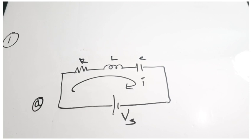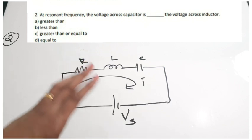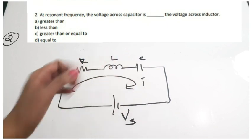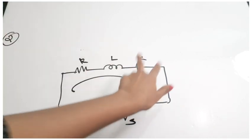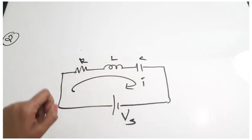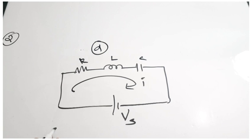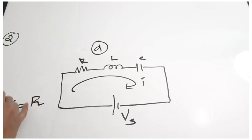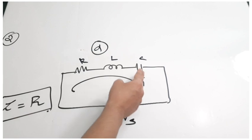Second question: at resonant frequency, the voltage across a capacitor is dashed the voltage across the inductor. During the resonance condition, the current will be at its peak value and the voltage across the inductance and the capacitance will be exactly the same. So at resonance, voltage across a capacitor will be equal to the voltage across the inductor. Also, the impedance of this circuit will be purely resistive, that is Z equals R. Correct answer is option D.